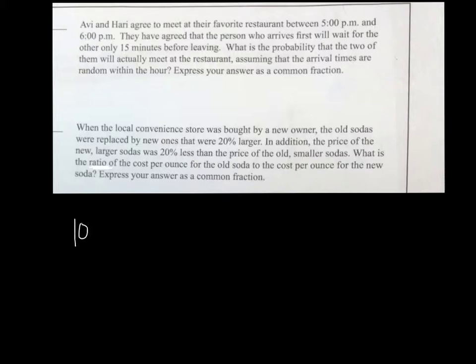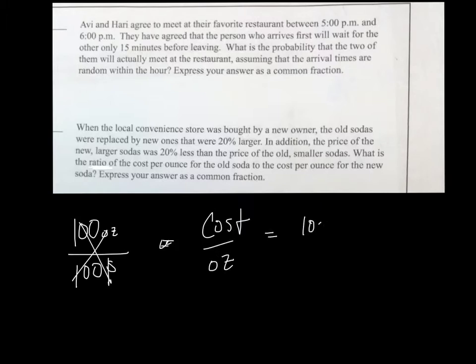So if we used to buy soda in a hundred ounce container, which is ridiculous, and it cost us a hundred dollars - a dollar per ounce. The cost per ounce to start is a hundred dollars for a hundred ounces, which is one dollar per ounce. Why did I pick a hundred? Because a hundred, 20 percent of the number, twenty percent is twenty.